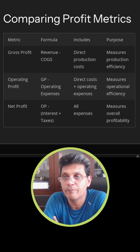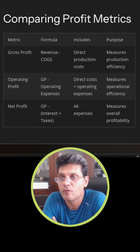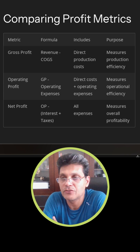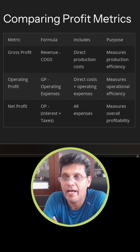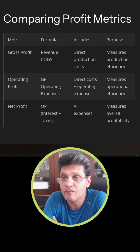Gross profit, operating profit, and net profit are three distinct measures of profitability that provide insights into a company's financial health at different stages of its income statement. Here is a breakdown of their differences.